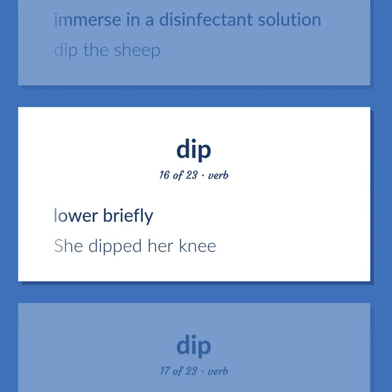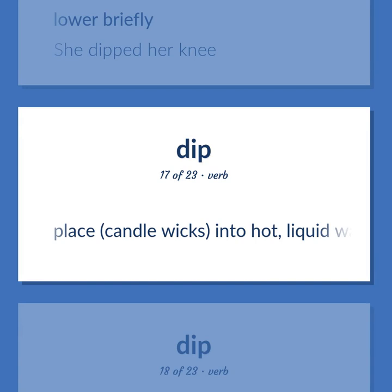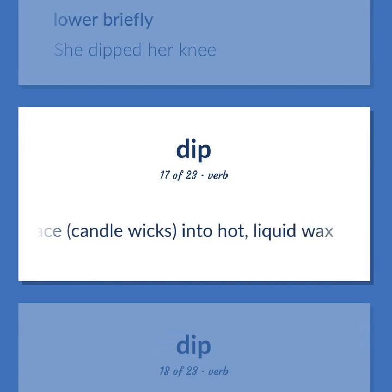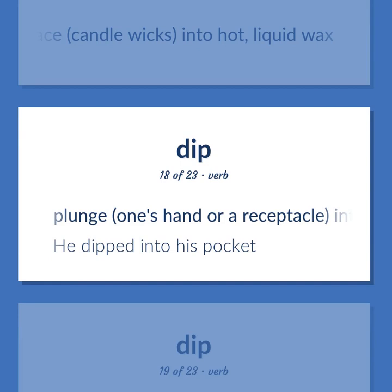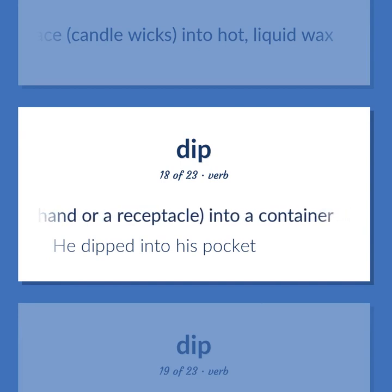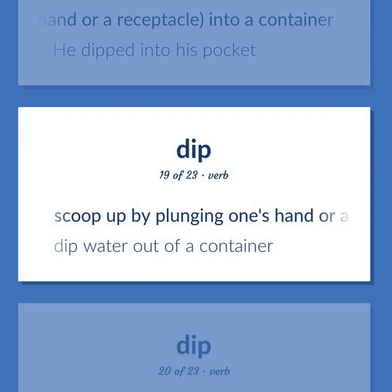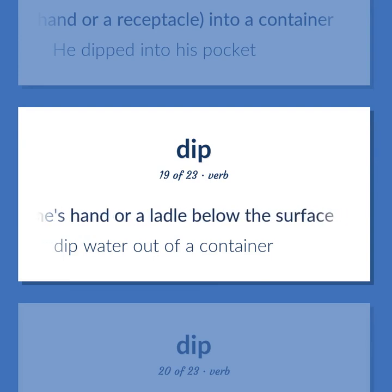Lower briefly. She dipped her knee. Place candle wicks into hot, liquid wax. Plunge one's hand or a receptacle into a container. He dipped into his pocket. Scoop up by plunging one's hand or a ladle below the surface. Dip water out of a container.